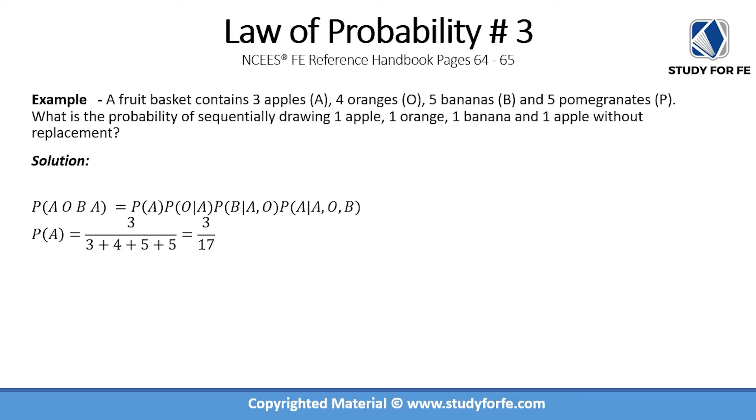Probability of removing the first apple is pretty simple. You have a total of three apples, and your total sample space is three apples, four oranges, five bananas, and five pomegranates. So it's simply 3 divided by 17.